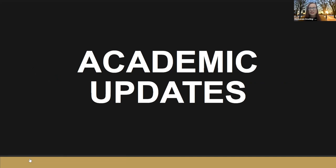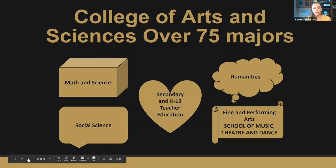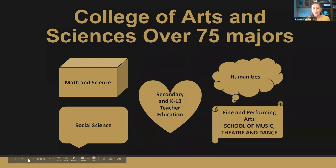At this time we'd like to transition to our academic updates presentation, welcoming the director of advising services for the College of Arts and Sciences. The College of Arts and Sciences at Oakland University is unique in that we have all the bench sciences and math, all of the social sciences, humanities, and also all of the fine and performing arts, as well as secondary education shared with the School of Education. We are a very large college covering many different subject areas.